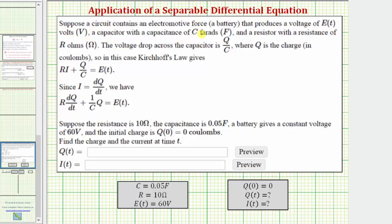Suppose a circuit contains an electromotive force — a battery that produces a voltage of E(t) volts, a capacitor with a capacitance of C farads, and a resistor with a resistance of R ohms. The voltage drop across the capacitor is Q divided by C, where Q is the charge in coulombs. Kirchhoff's law gives R times I plus Q divided by C equals E(t). Since I equals dQ/dt, we have the differential equation R(dQ/dt) + (1/C)Q = E(t).